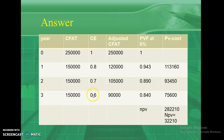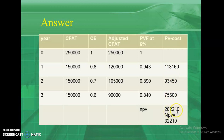For year 3, the certainty equivalent is given in the question. Multiply it with the cash flow after tax to get the adjusted cash flow after tax. The 6% PV factor for year 3 is 0.840. Multiplying both gives 75,600. The sum of PV of cash inflows is 1,13,160 plus 93,450 plus 75,600, totaling 2,82,210. The cash outflow is 2,50,000, so NPV equals 2,82,210 minus 2,50,000 equals 32,210. This is the NPV of Proposal Y.